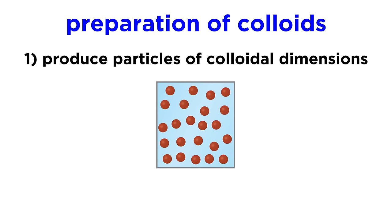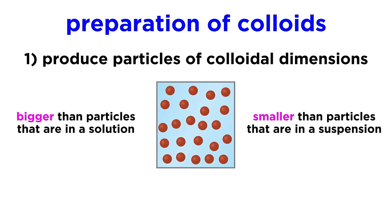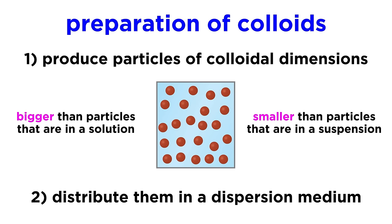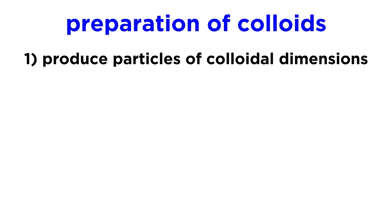Now that we know what colloids are, let's discuss how they can be prepared. In order to prepare a colloid, we must first produce particles of colloidal dimensions, which means they must be above a size that would generate a solution, but below a size that would generate a suspension, and then we must distribute these particles throughout a dispersion medium. There are two ways we can prepare these particles.